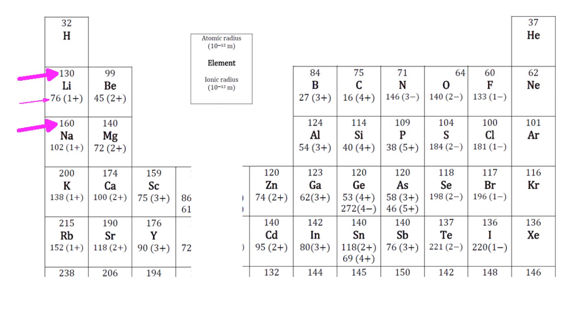Notice that at least in group 1 the positive ions seem to be smaller than their parent atoms. That trend also seems to follow in group 2. Again the positive ions, which are atoms that have lost electrons, are smaller than their parent atoms. And that's actually true for all positive ions.